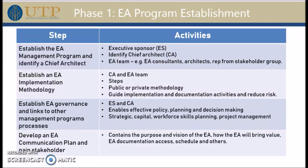If you look at this phase, the input will be the need of having an EA program. The need of having an EA program should come from the executive sponsor — the group of people that is going to buy this EA implementation. The output of this phase is the EA communication plan, which is basically a report that contains the purpose and vision of the EA. It talks about how the EA will bring value to the organization, and also covers documentation, access, schedule, and other information important to gain buy-in from the stakeholders.